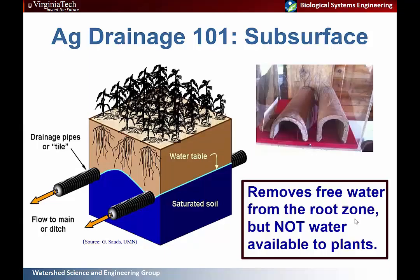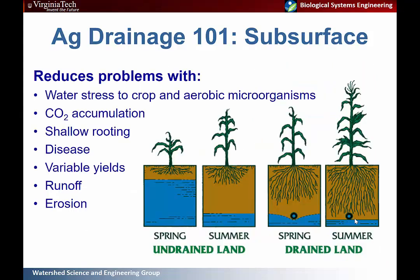The purpose of the tile drain — as opposed to the surface system which removes ponded surface water — is to remove water that's saturating the root zone. This doesn't remove plant-available water because there's a capillary fringe that allows roots to access water above the saturated zone. How large that capillary fringe is depends on your soil texture and type, so that also needs to be considered.